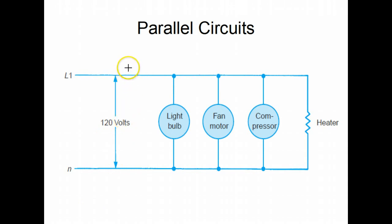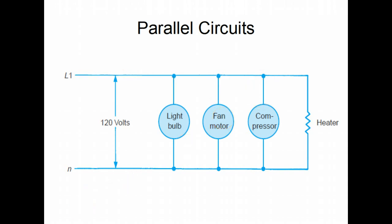If we had another light bulb added in series in this position, this light bulb would come on but it would take some of the voltage from the power source and drop that voltage — then this light bulb would be dim, this fan motor wouldn't run properly, nor would this compressor run properly. So all of the loads in an air conditioning circuit and in a schematic diagram are in parallel.